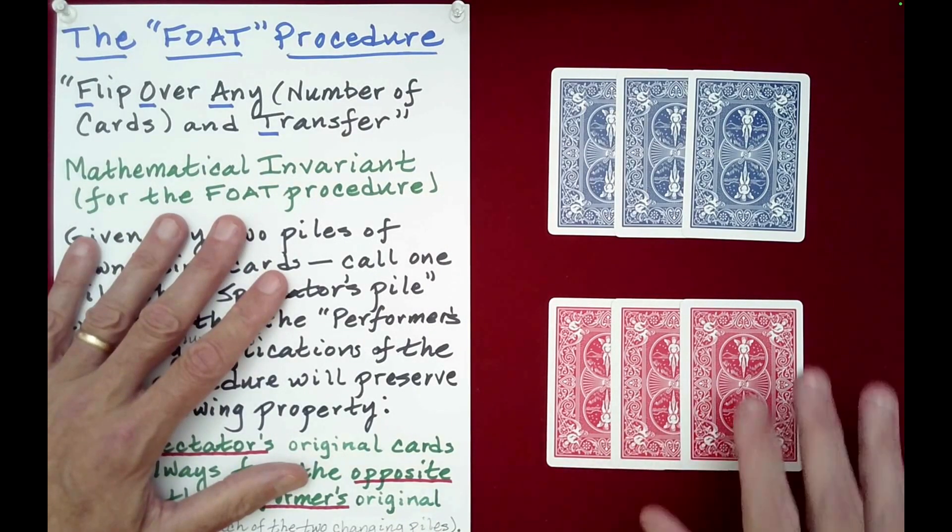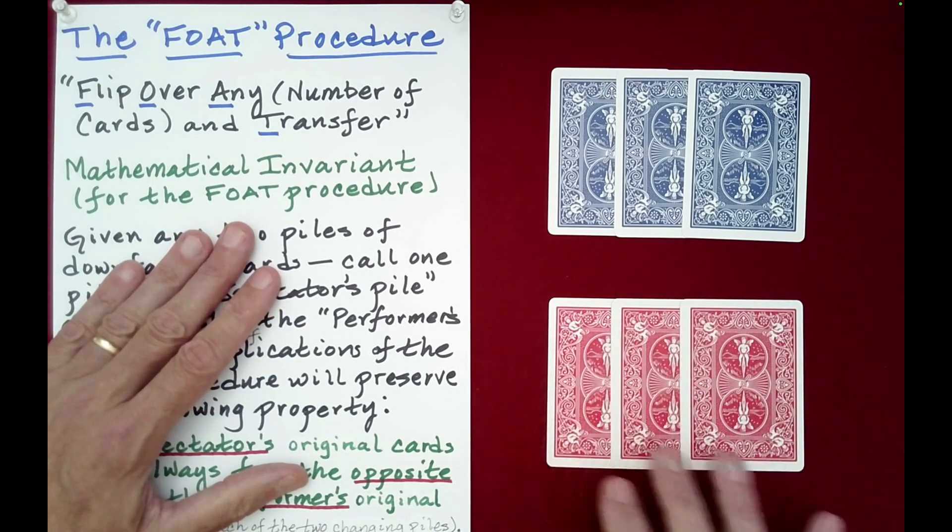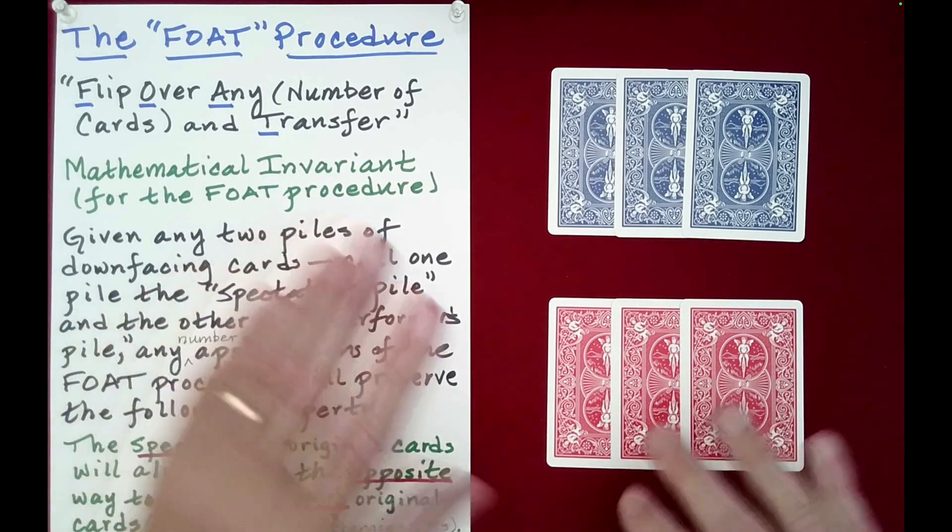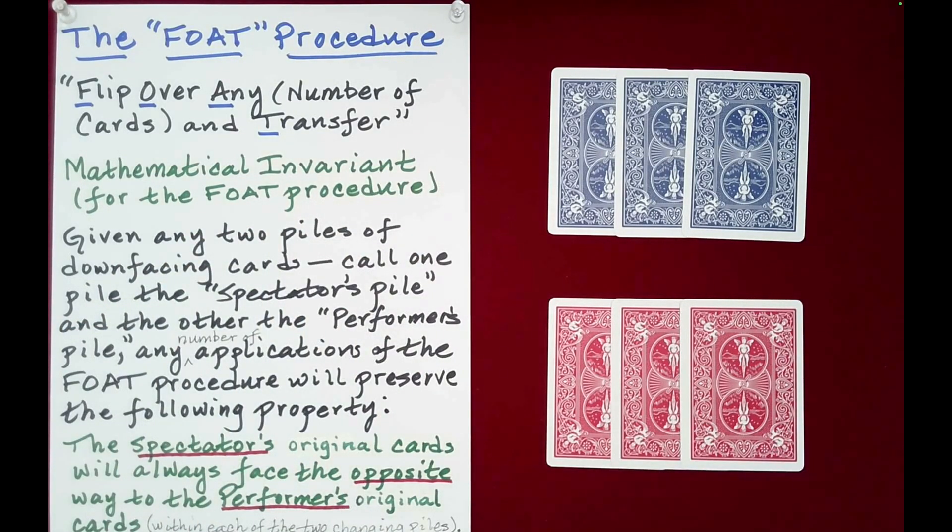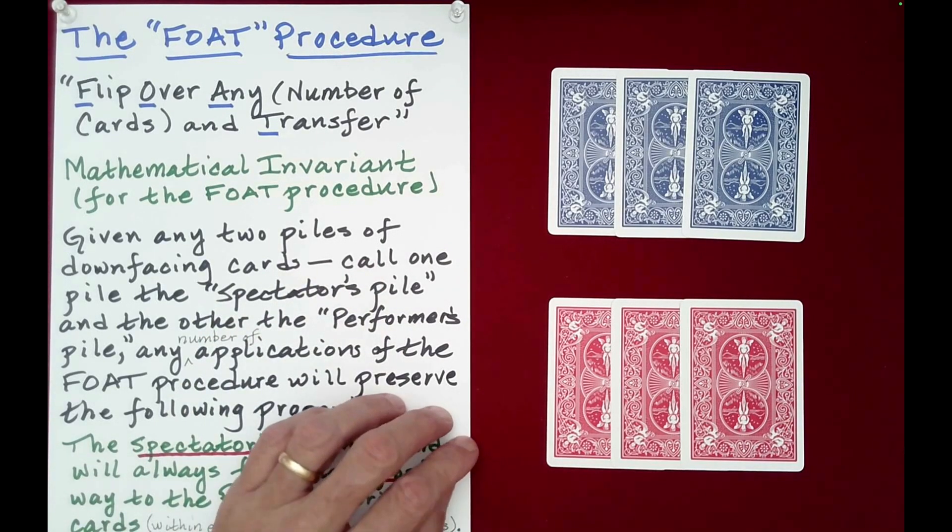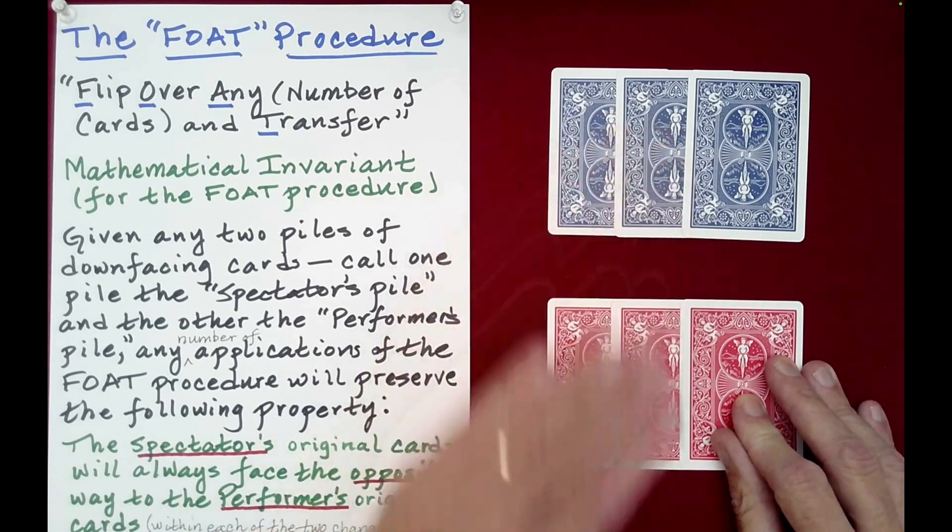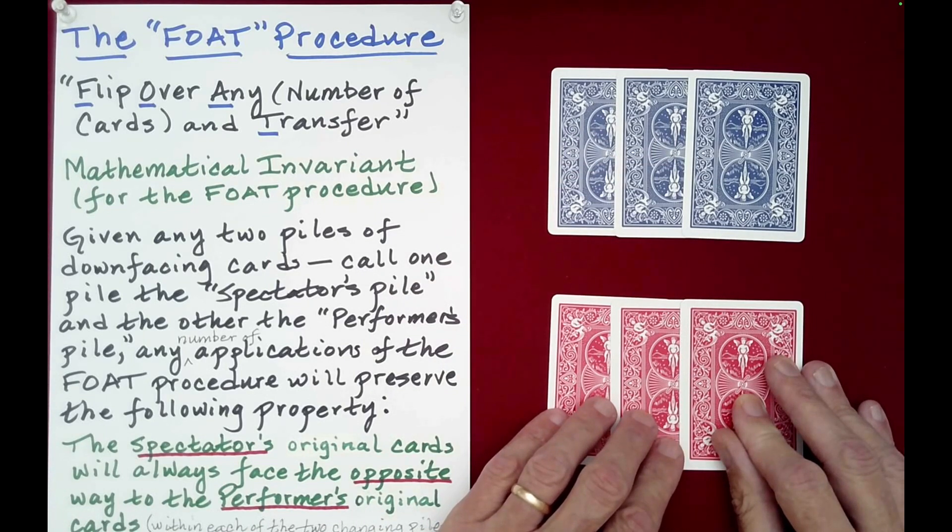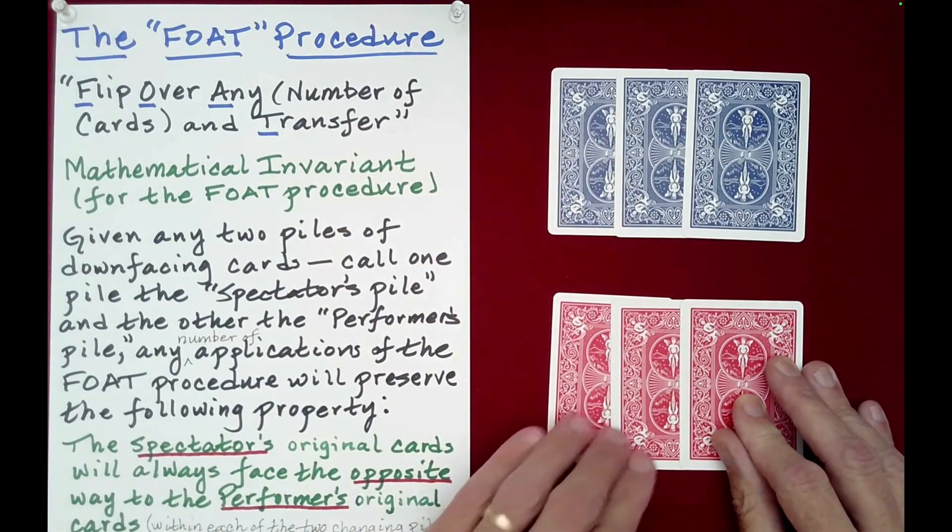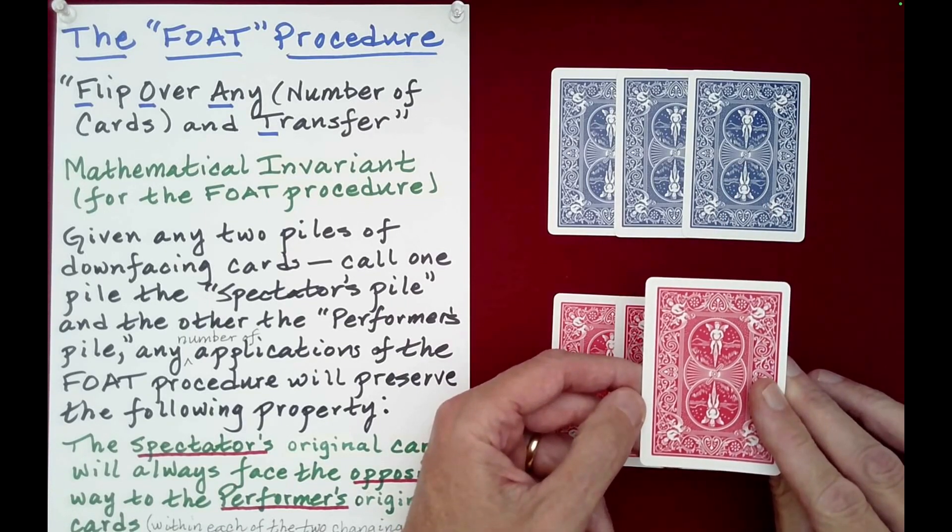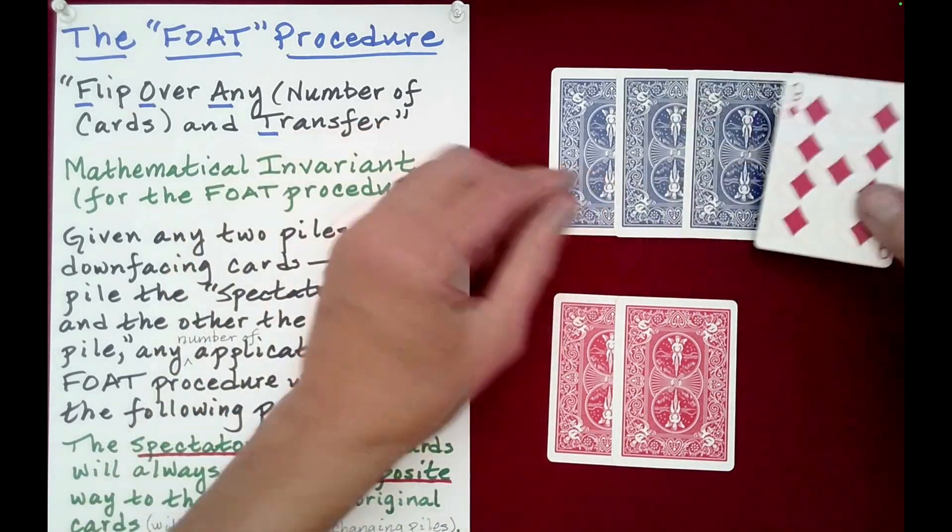The spectator's original cards will always face the opposite way to the performer's original cards within each of the two changing piles. So the thing to do is think of the performer's pile as consisting of just red cards, which is what I'm doing here. And think of the spectator's pile as consisting of just black cards. Now, in the actual presentation, that's not true. We have red and blacks mixed in, which is just muddying the waters. So for example, if I want to move just one card here to the spectator's pile, the way that it's done within this routine is you flip it first and then you mix it in. So we'll just put it up there for now.